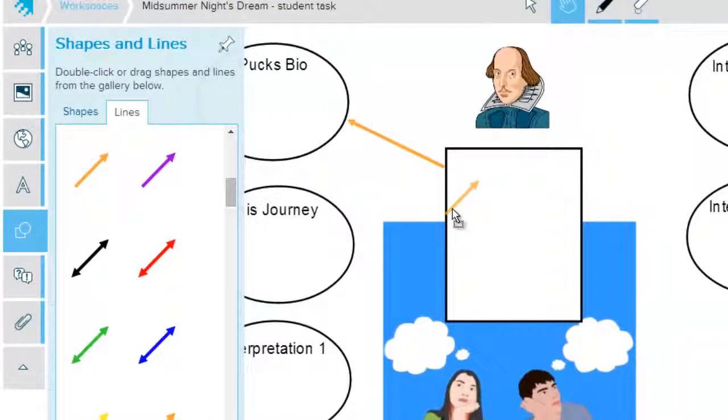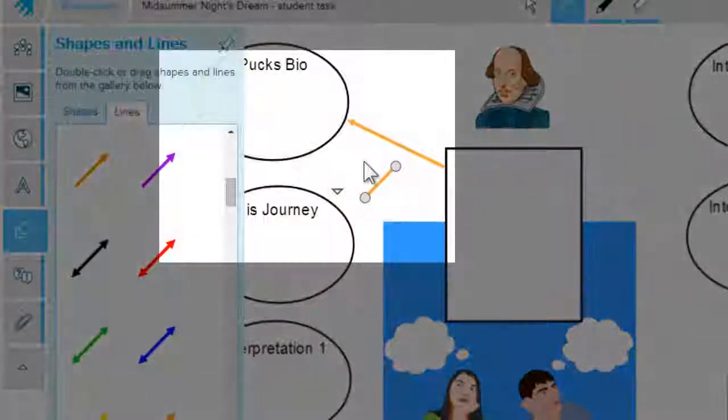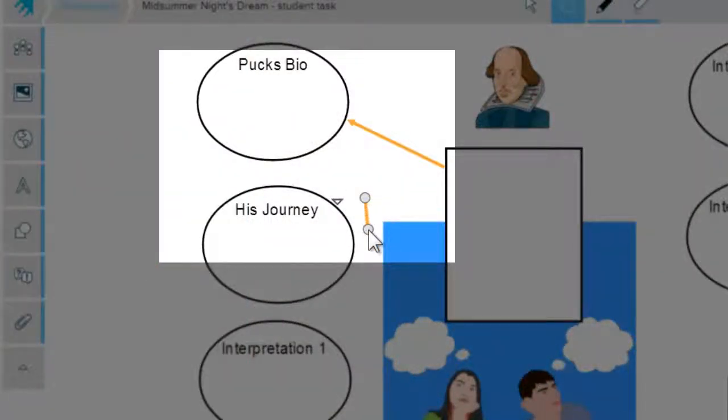Once the line is in position on your workspace, you can easily reposition as needed. Lines are a great way to set paths for your students to follow.